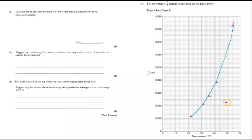So we're going to use that graph to answer parts D, E, and F. Using your line of best fit, estimate the time for the cross to disappear at 40 degrees Celsius. What you want to do here is show very clearly how you're getting to your answer. So you're going to draw that line in. You're going to go up at 40 degrees until you meet the line and then draw the line going across.